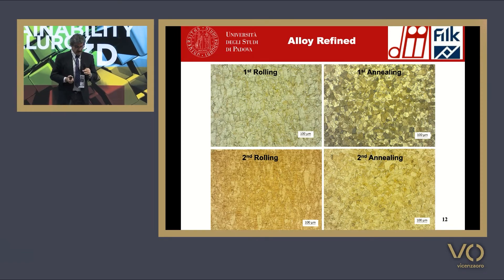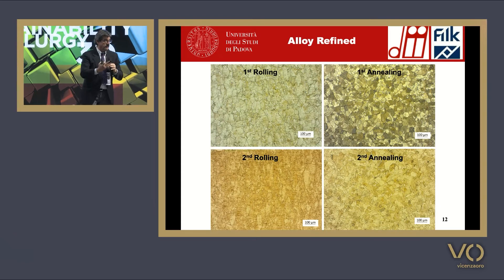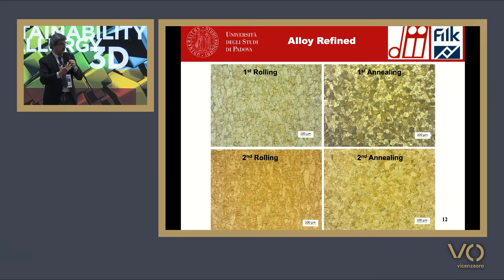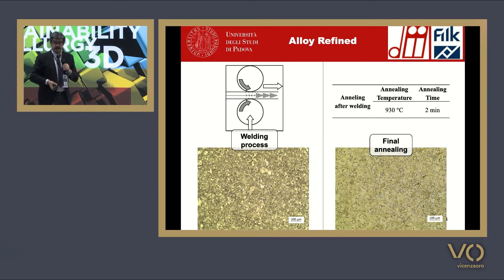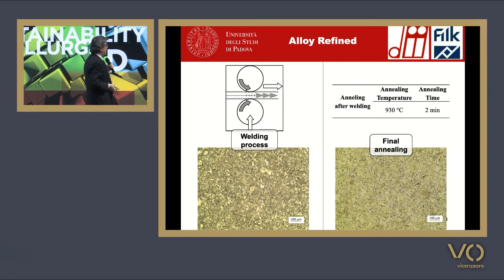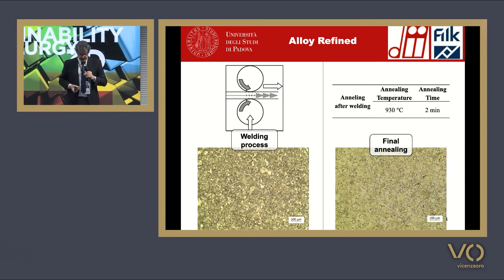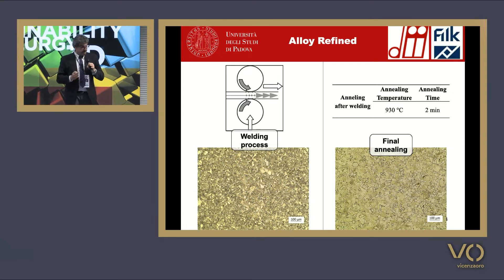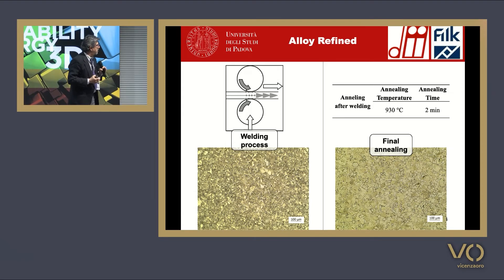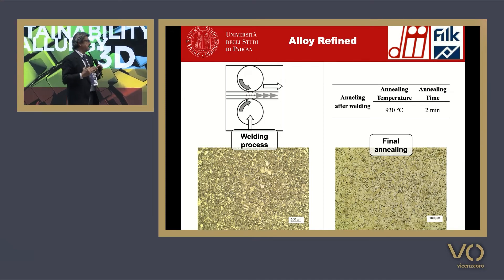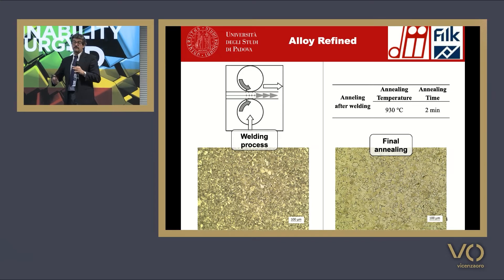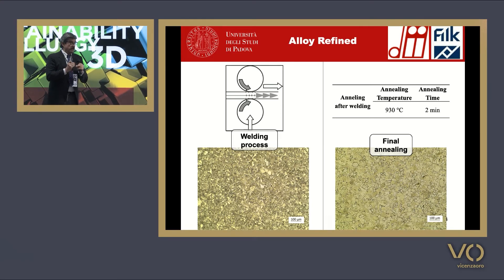But what happens if the material, when it is recrystallized, is further annealed and the time at high temperature becomes larger? There is the formation of very large grains that grow from the strain-free grains. This is because the grain boundary energy reduces with the decrease in grain boundary area. It is necessary to increase the size of the grains. The grain growth involves the movement of grain boundaries, and it is important to reduce this grain growth in order to maintain high mechanical properties and avoid brittleness of the alloy.